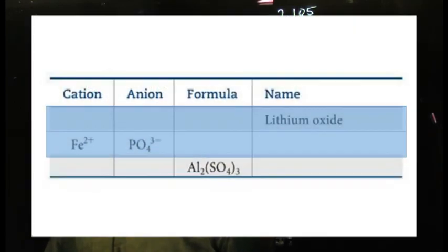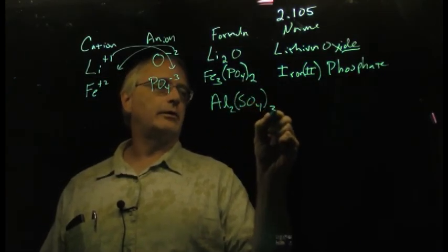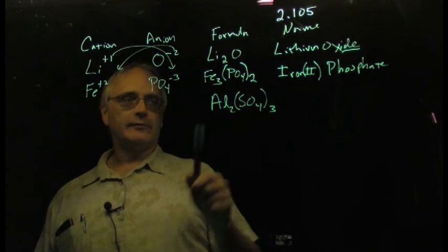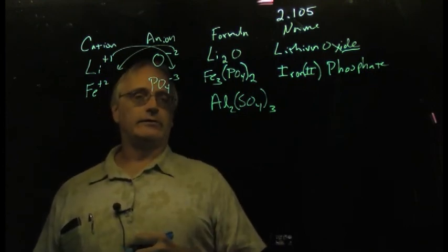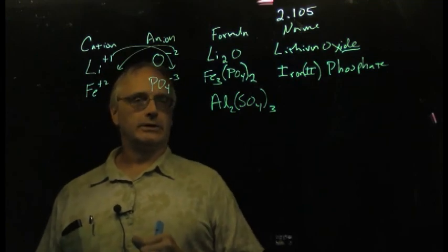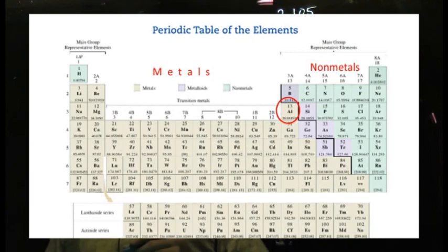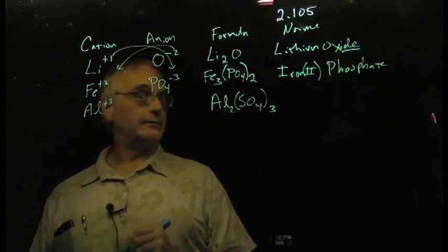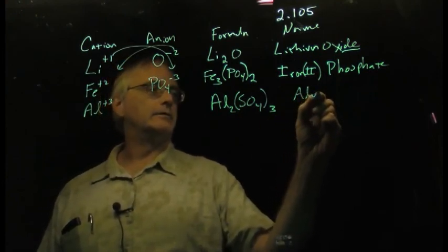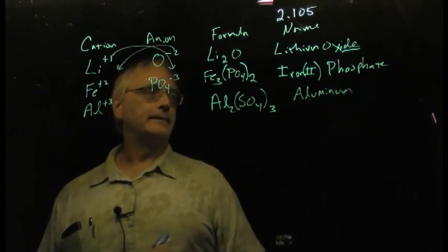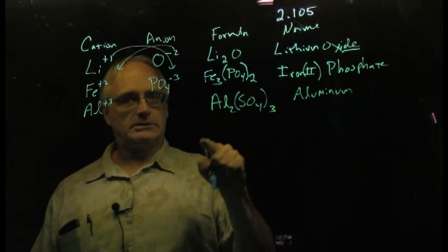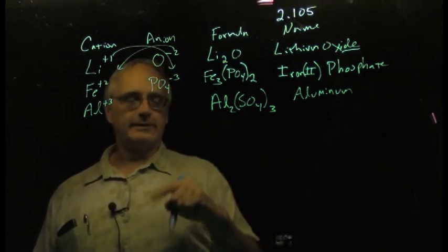Next up, they give us the formula this time. They tell us Al2SO4, put a big set of parentheses, and a three, and asked us to work with that. Well here we go. First, looking at this one, aluminum, not a transition metal, yay, we don't have any of that confusion about the charge. It's a member of column three of the periodic table, and those beasts are going to tend to form positive three charges, and its name is aluminum.